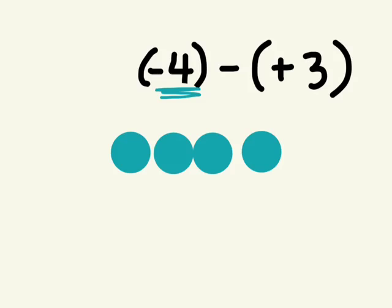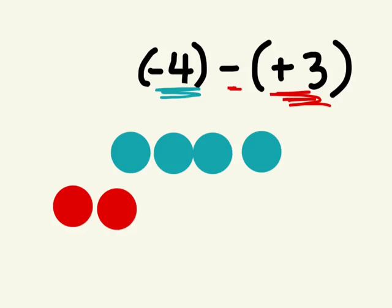So I have four negative counters, these are all negatives, but I need to take away three positives. Do I have any positive counters right now to take away? We don't have any positive counters, right? So I can't actually take away three positives. But if you remember the zero principle that I taught you earlier, if I draw three positives, you can't just add three to an equation because that will change the equation. But if I add three positives and I add three negatives, these actually cancel out, right? So I'm actually adding nothing to it. But I'm able to now, because I've added three positives and three negatives, which end up canceling each other out.